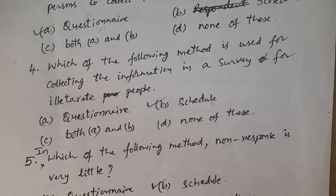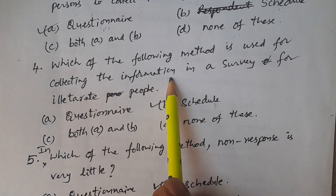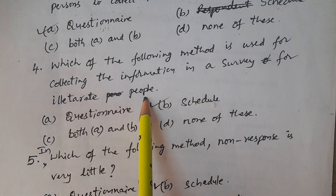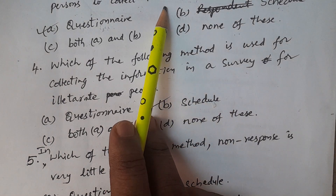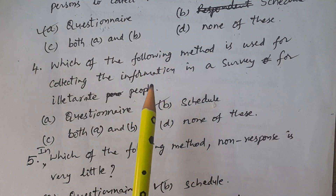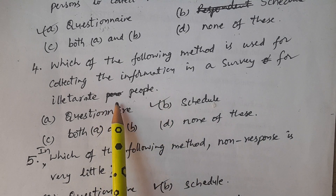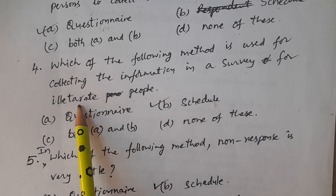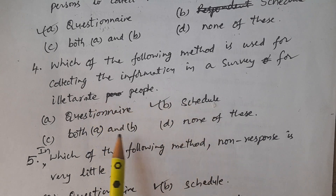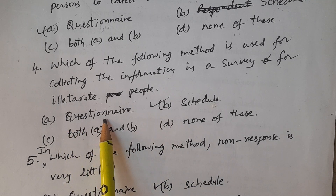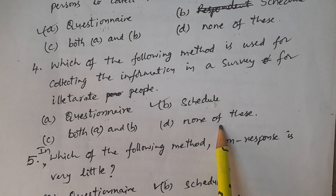Fourth question: which of the following methods is used for collecting information in a survey for illiterate people? Options: A. Questionnaire, B. Schedule, C. Both A and B, D. None of these. The option is schedule.